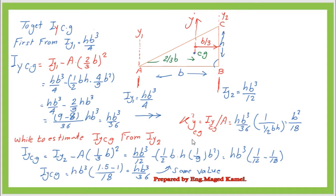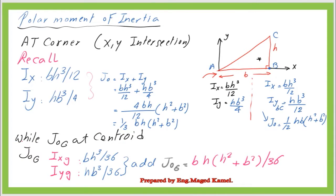We can now calculate the radius of gyration using K²_YCG = IY_CG divided by the area, which is (HB³/36) divided by (½BH), giving us B²/18. Now, having calculated the moment of inertia in both X and Y directions, we can proceed to estimate the polar moment of inertia.